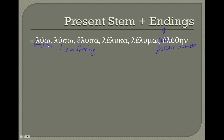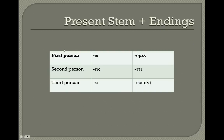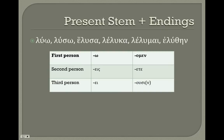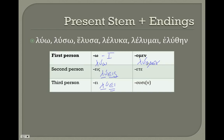We're going to take that stem and add endings that tell us who is doing the action. So we take our stem 'lu' and add the ending 'o' for 'I' — giving us 'luo'. 'You are freeing' or 'you are untying' is 'lueis' — our stem plus the ending '-eis', which tells us second person singular. 'We are untying' — our stem 'lu' plus '-omen' — gives us 'luomen'. That '-omen' tells us it's 'we'.